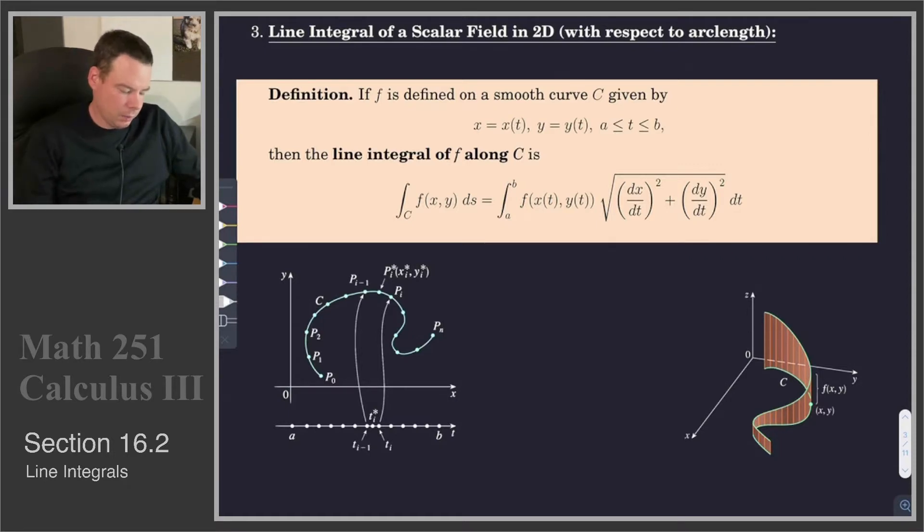If F, a scalar function, is defined on a smooth curve C, which is given by the parametrization x(t) and y(t), then the line integral of F along the curve C is given by the integral—and we use as our lower limit of integration the curve name C. So this is kind of like our double and triple integrals where we wrote the integral over the region. Here we're using C as the curve name. We're integrating along the curve C of our scalar function F with respect to arc length, so ds.